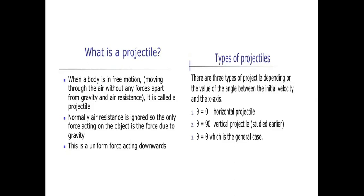Gravity is a uniform force acting downwards. There are certain types of projectiles depending upon the inclination of the velocity. We know velocity is tangential to the motion. If our motion is a straight line then our velocity will be horizontal; if it is a curved or curvilinear motion then our velocity will always be tangent to the path.